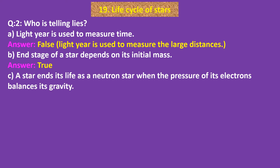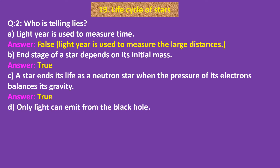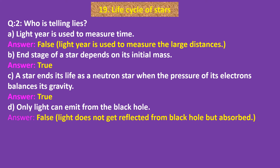C. A star ends its life as a neutron star when the pressure of its electrons balances its gravity. Answer: True. D. Only light can emit from the black hole. Answer: False. Light does not get reflected from a black hole but is absorbed.